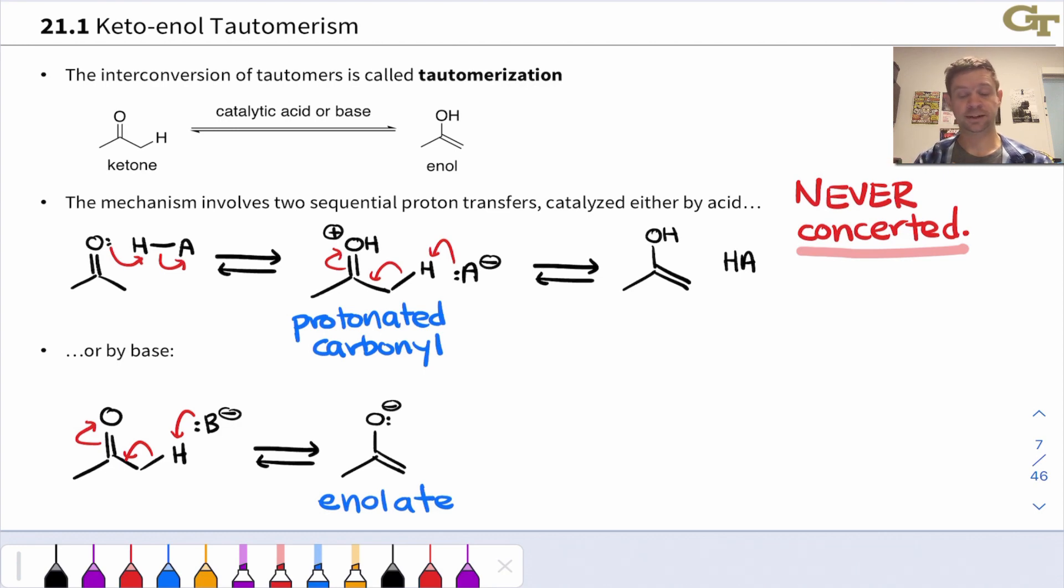The catalytic base deprotonates at the alpha position, we get an enolate intermediate. That enolate is, to some extent, basic at the carbonyl oxygen. So now the conjugate acid of the base donates a proton to O-, and we end up with the enol product.